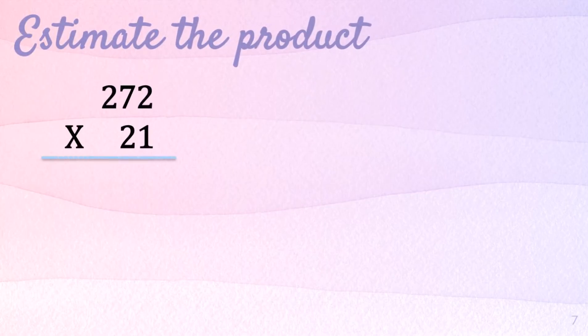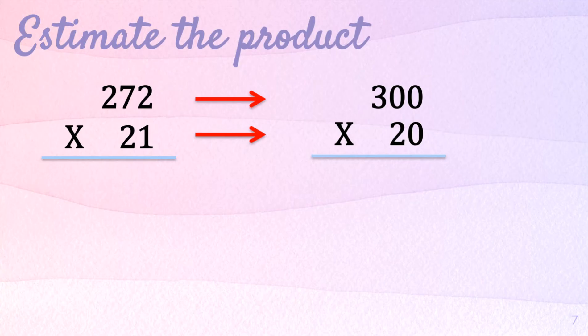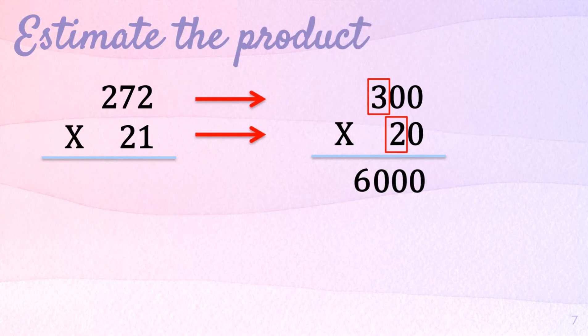Try. Estimate the product of 272 times 21. The first step is to round the multiplicand and the multiplier to the greatest or highest place value. For the multiplicand, we have 272, and the greatest place value is the hundreds place. So 272 will become 300. And for the multiplier, the greatest place value is tens, so 21 will become 20. For the second step, multiply the rounded factors, starting with the non-zero numbers. So 3 times 2 equals 6. Then count the number of zeros and the final answer is 6,000.